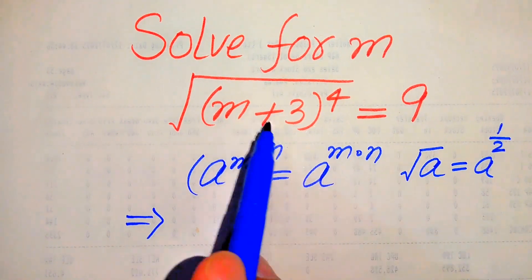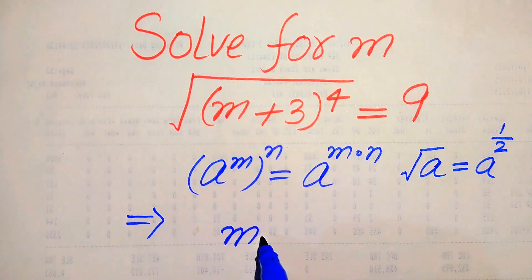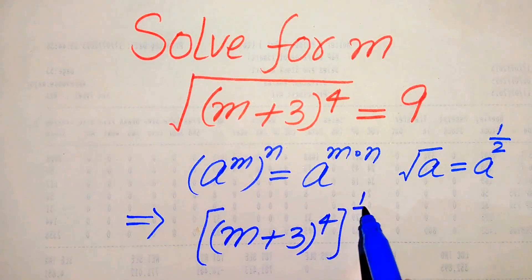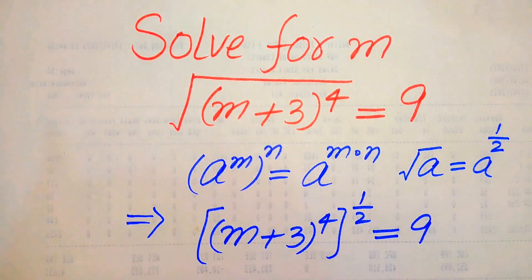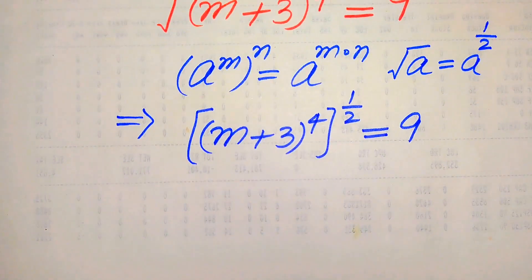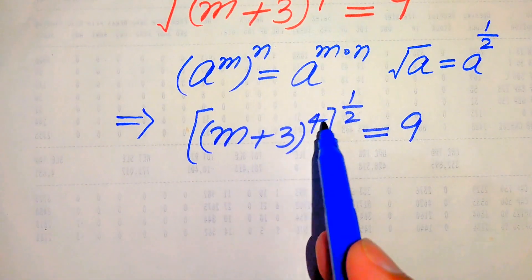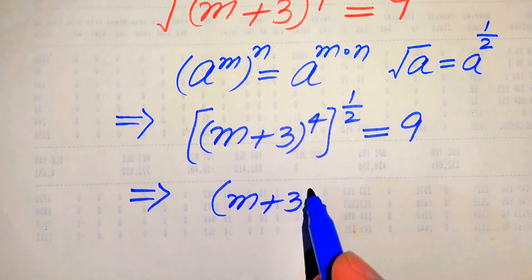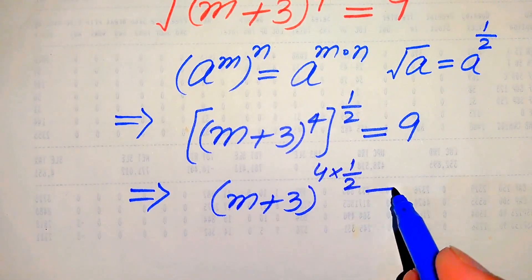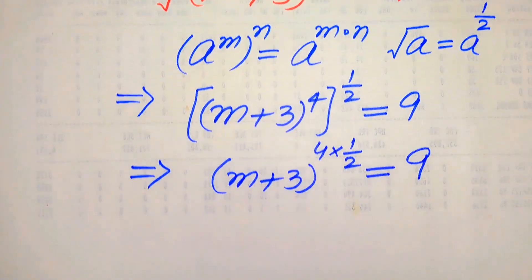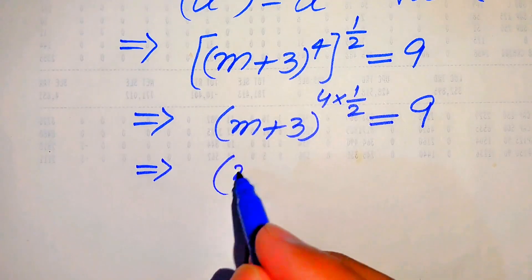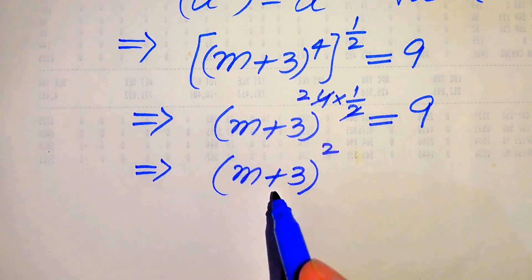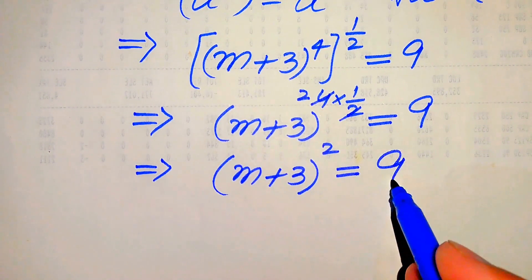In this pattern, we write the left hand side as (m+3) to the power of 4, with whole exponent 1 over 2, equals 9. Now we apply this exponent law and multiply the exponents: (m+3) to the power of 4 multiplied by 1 over 2 equals 9. Simplifying, 4 times 1/2 equals 2, so we get (m+3) squared equals 9.